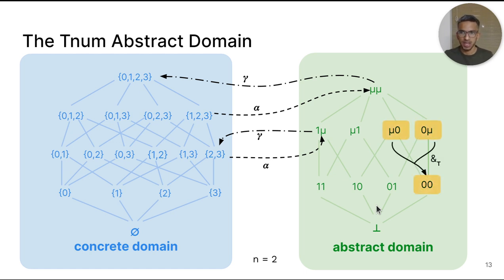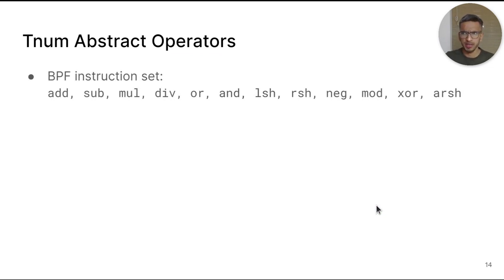We can also define abstract versions of concrete operators in the abstract domain. For example, we can abstract the concrete logical AND operator into an abstract logical AND operator that takes as input two TNUMs and produces an output TNUM. Now, to soundly analyze BPF programs, we need to define TNUM abstract operators corresponding to the following well-known operators over registers supported by the BPF instruction set.